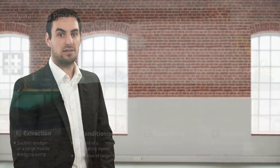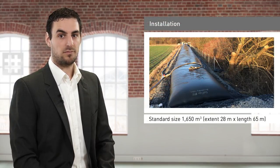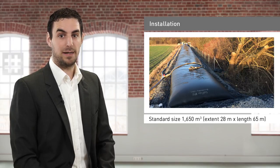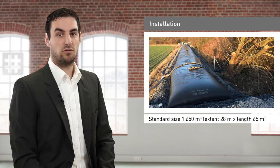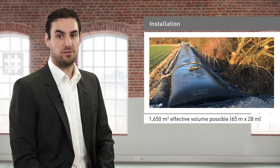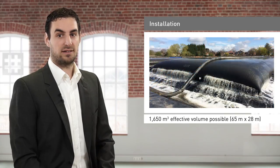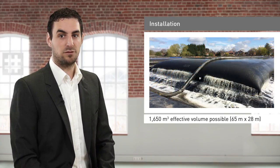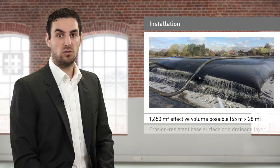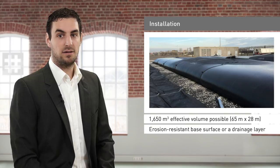Dewatering tubes can be readily manufactured with a length of 65 metres and a perimeter of 28 metres to provide 1,650 cubic metres of storage capacity. To ensure the controlled drainage of water from the tube during dewatering and to prevent erosion of the surrounding area, the base surface should be erosion-resistant or provided with a drainage layer.